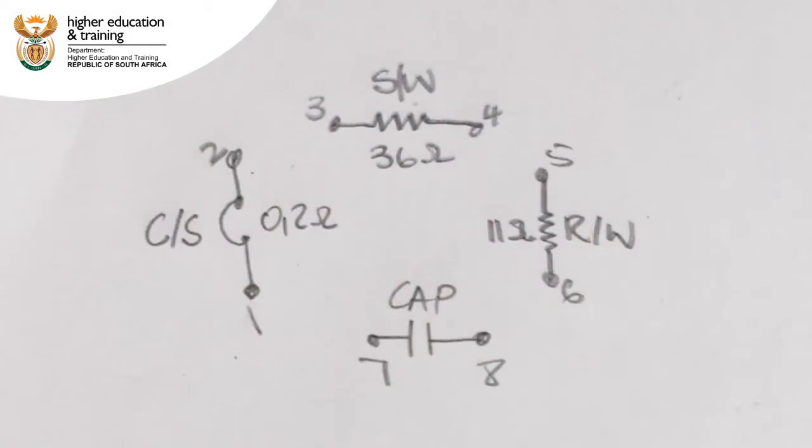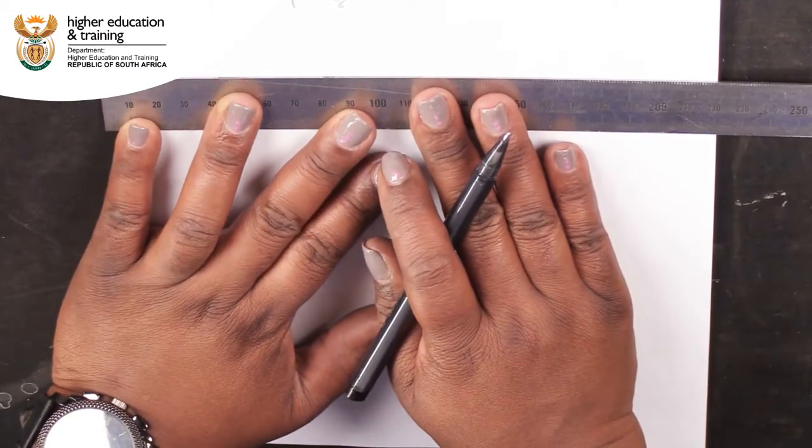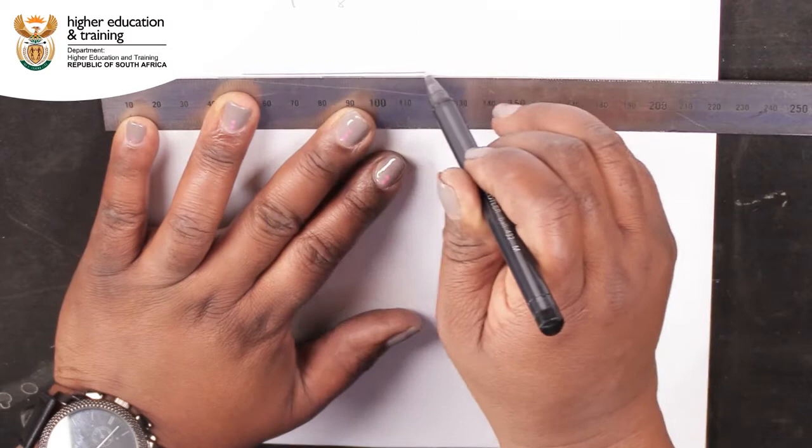Our diagram indicates all of our results thus far and shows us how this motor is wired internally. Now that we have mapped out the different components, we can draw a wiring schematic for the motor.